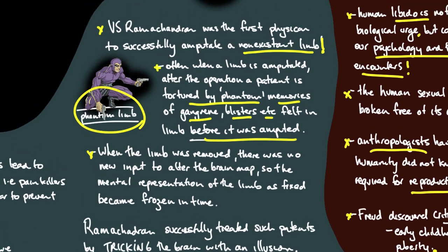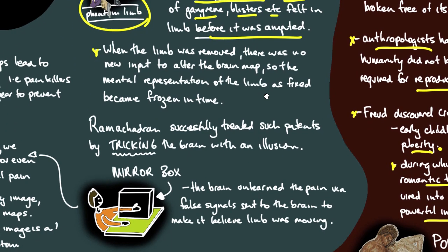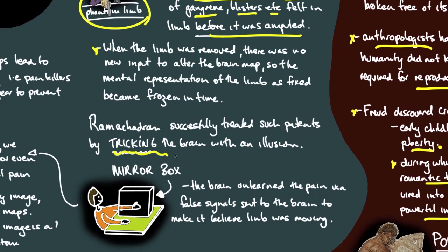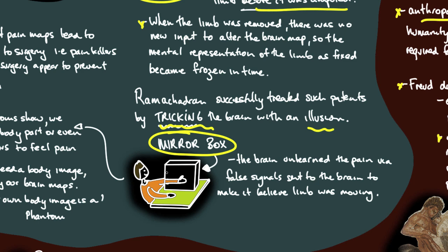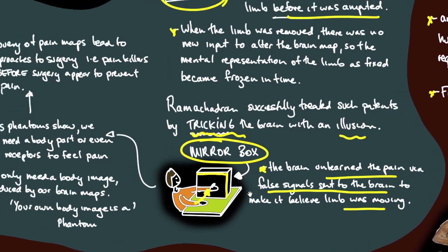And this pain that the patient's experiencing is very, very real. V.S. Ramachandran has successfully treated these patients by a mechanism that he used to trick the brain with an illusion, using something called a mirror box. It's like something out of a magic show. He performed mirror box therapy where the patient would, if they were missing a left arm, look at a reflection of their good arm projected near where the amputated arm would be. This tricked the brain into believing that it existed. The brain unlearned the pain via false signals sent to the brain to make it believe the limb was actually moving. Believe it or not, most patients find that their pain dissipates or is removed altogether, and their quality of life goes through the roof as a result.